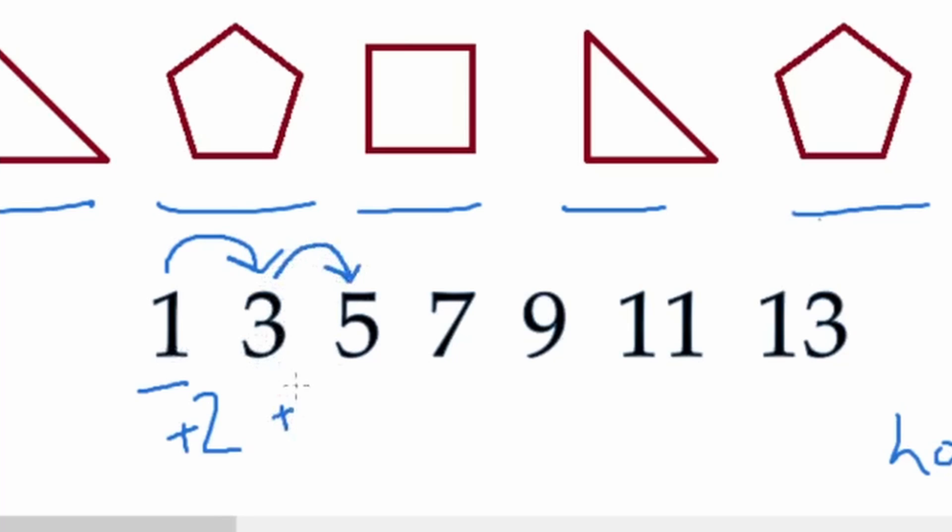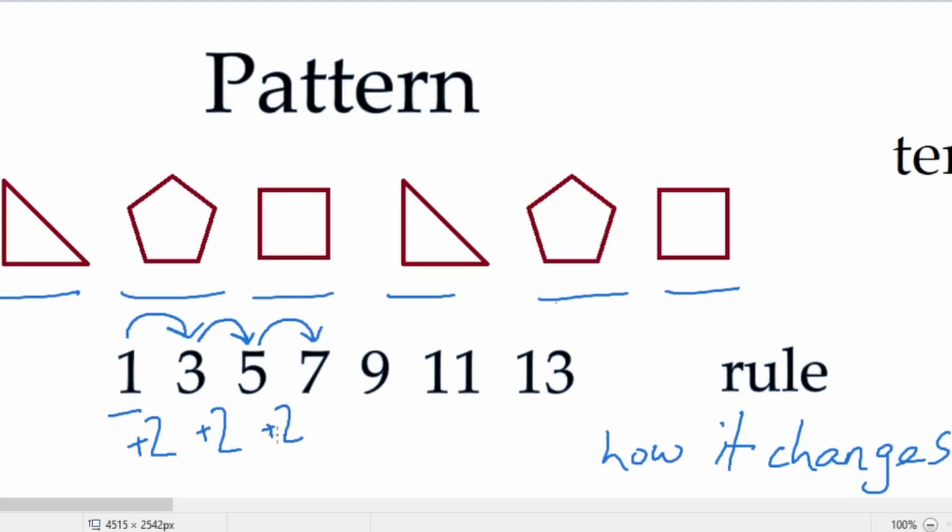Is three plus two five? Yes, it is. Let's check it one more time. Five plus two is seven. Is that correct? Yes, it is. And so we know this is a rule because it's changing the same way and it will continue forever in the same way, changing the exact same way each time. And that's the rule.